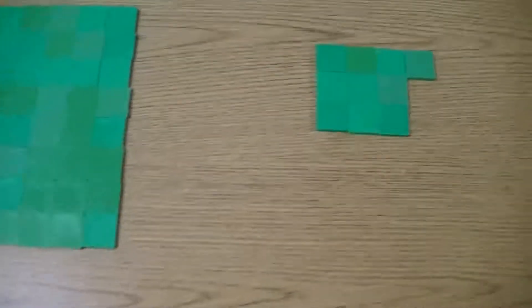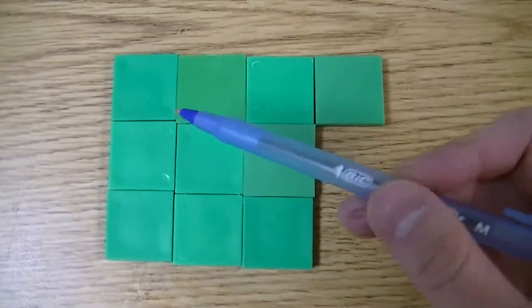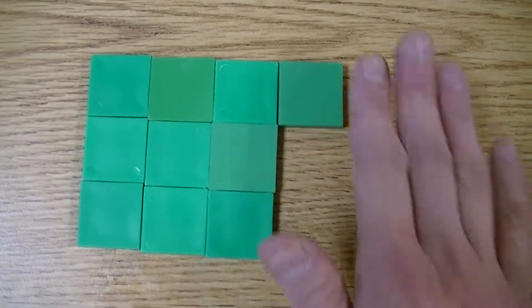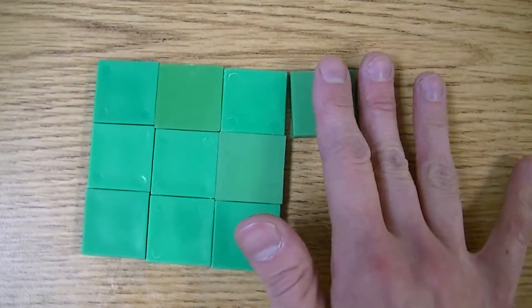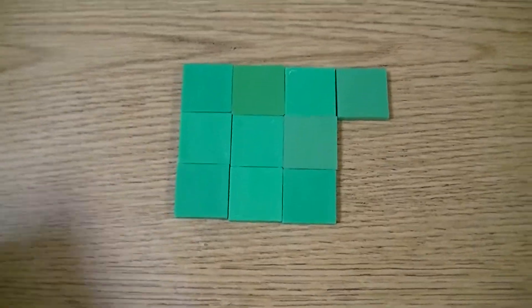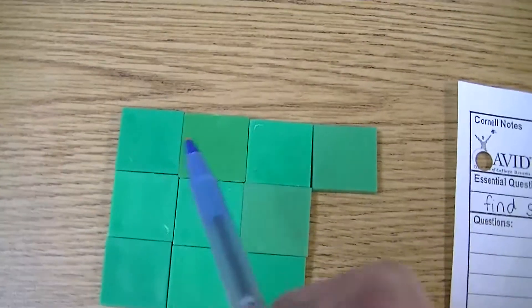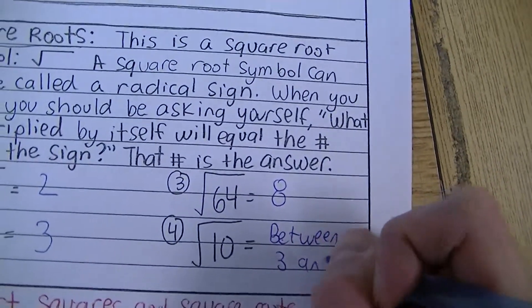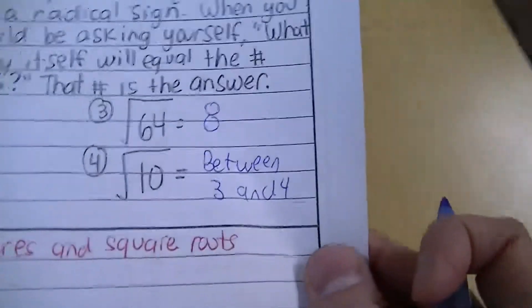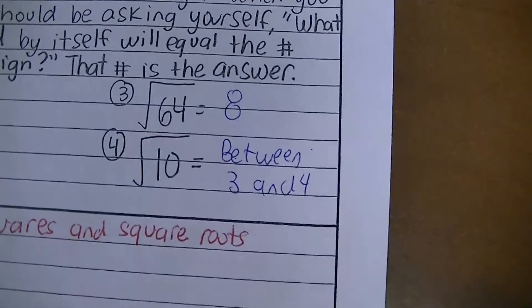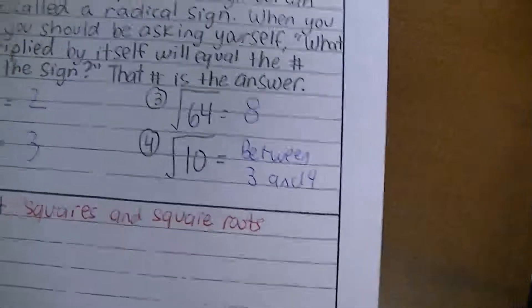Number 4 asks you the square root of 10. Notice what I built — there are 10 tiles here. 10 is not a perfect square because it does not form a square when you build it. So the answer to the square root of 10 is going to be between 3 and 4. If you don't have a calculator, you probably can't do that one in your head, so I'll show you what you would do on your calculator when confronted with a number that's not a perfect square.